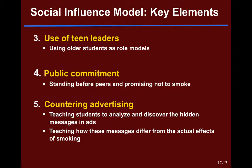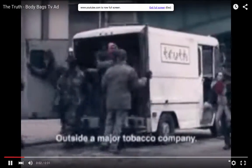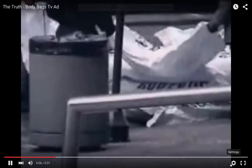The fifth element of the social influence model is countering advertising. If you've encountered the Truth campaign — those powerful videos with the body bags — let's take a look at one. These may be a little before your time, but this is a sample of the kind of advertising the Truth campaign produced — showing what 1,200 people actually look like.